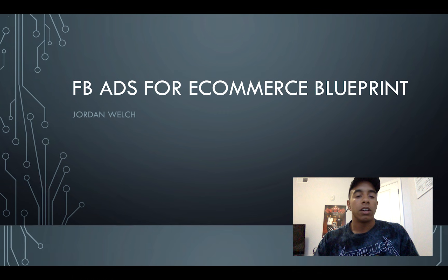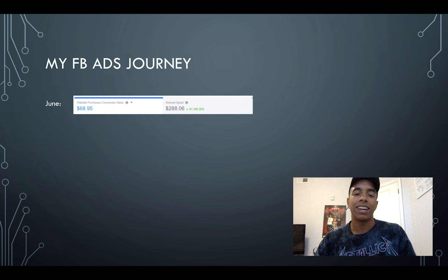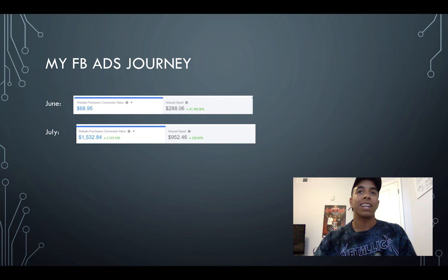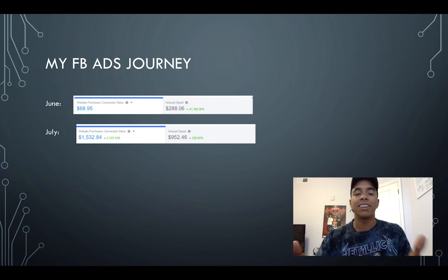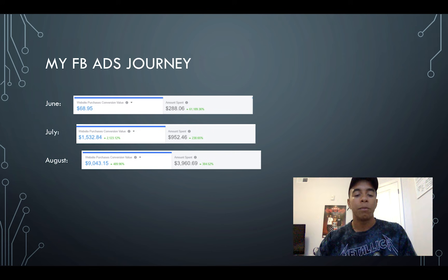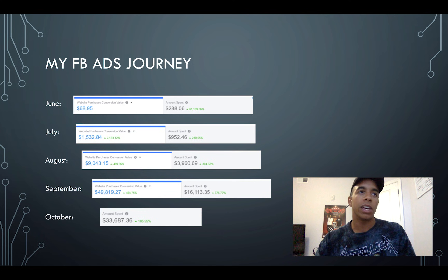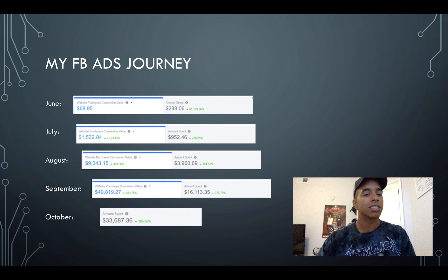In my last video I talked about the power of Facebook ads and showed some numbers on how fast my business grew using Facebook advertising. In my first month I spent less than $300 and made basically nothing — two sales, lost money. The next month I invested a bit more but still lost after fulfillment costs. Then in August I spent around $3,000 to make $9,000 — my first profitable month. Since then I've continued scaling, and last month we spent $33,000.